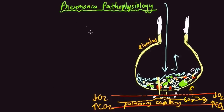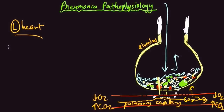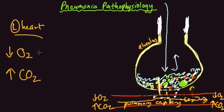Overall, you get the generalized effect that the blood returning to the left heart contains a lower level of oxygen and a higher level of CO2 than it would when the lungs are healthy. This is hypoxia and hypercarbia.